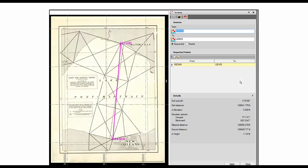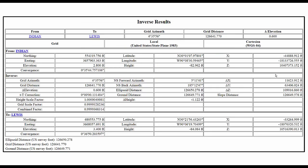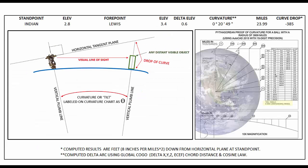I did two radial searches on either side of the lake and found these marks. Here's a station called 'Crossover Seven' with its latitude and longitude — a classical geodetic station done by triangulation. What I chose to do was take two of the stations — 'Indian' and 'Lewis' — and run a geodetic inverse to get the distance, azimuth, and change in elevation. Then I put those results on my standard chart showing the horizontal tangent plane and the drop of the curve.